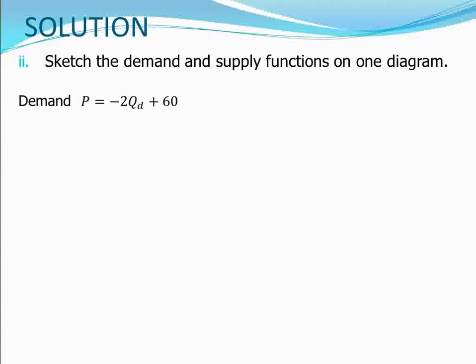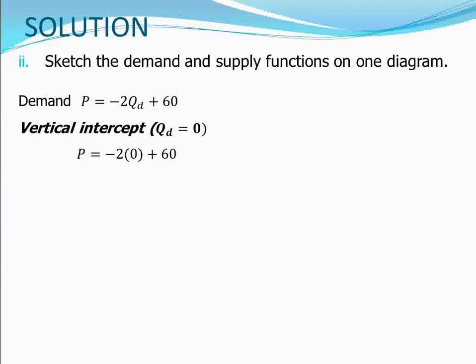Starting with the demand function, we find the vertical intercept as the value of P when quantity is zero. Since we plot price on the vertical axis and quantity on the horizontal axis, we substitute Q = 0 into the demand function. Doing so gives P = -2(0) + 60 = 60, so the vertical intercept coordinate is (0, 60).